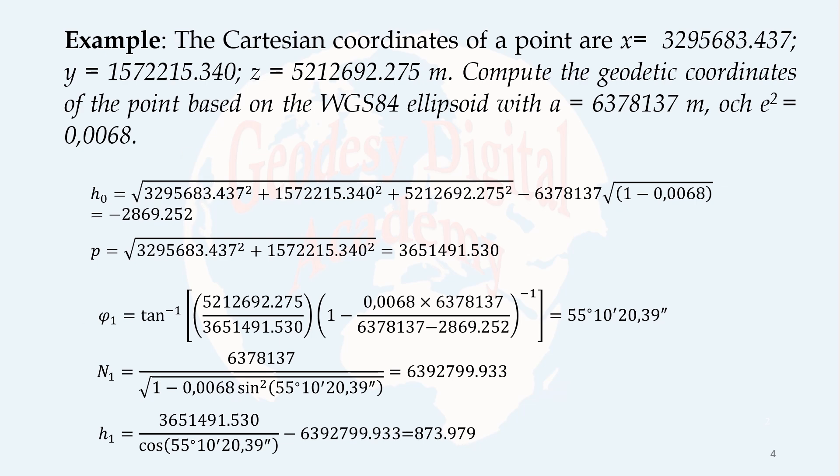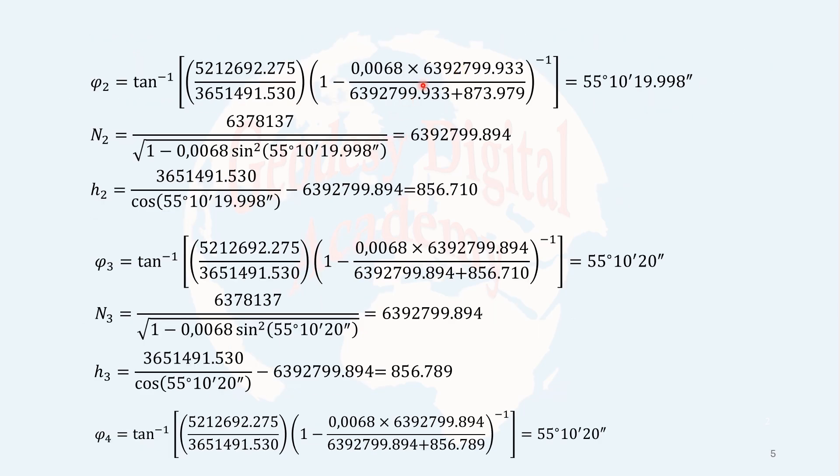So, after inserting these values in the formula, I get new phi, which is phi2. And phi2 is inserted to the formula for the n here. As you see, this phi2, I have already computed here. It comes to this formula here. I get a new n. And the new n and phi both comes to the formula for computing h2. And I get a better value for h.